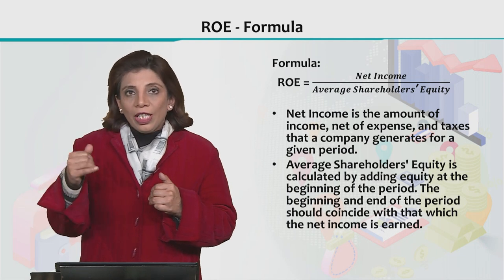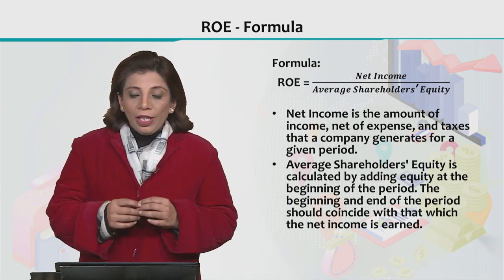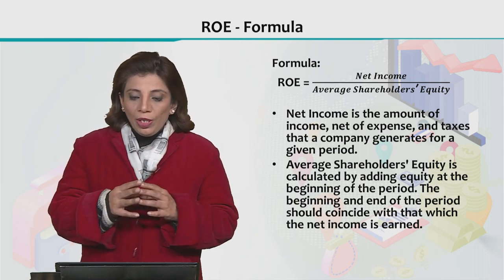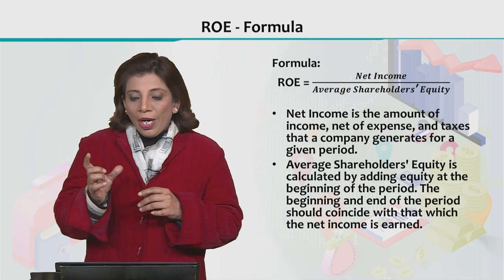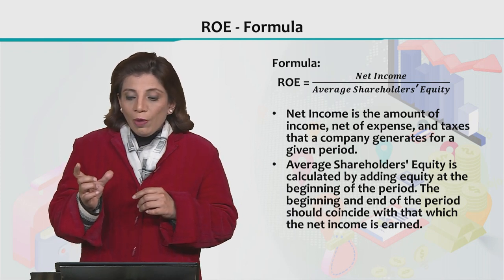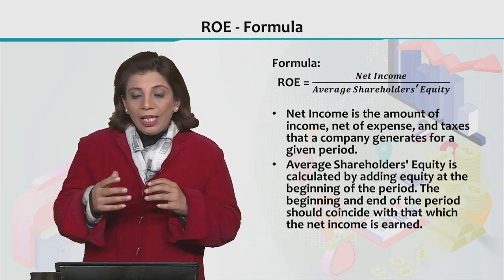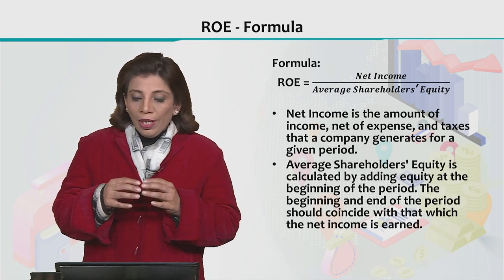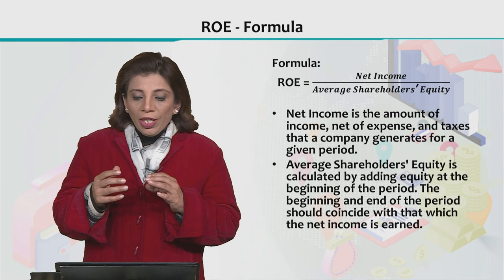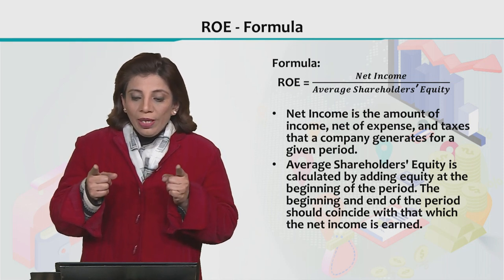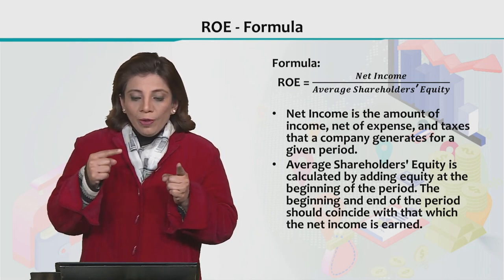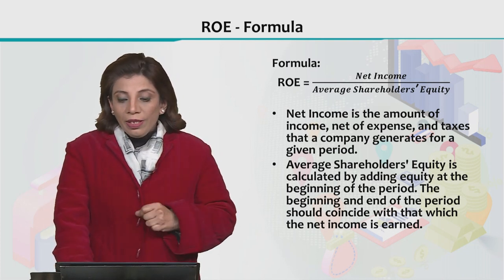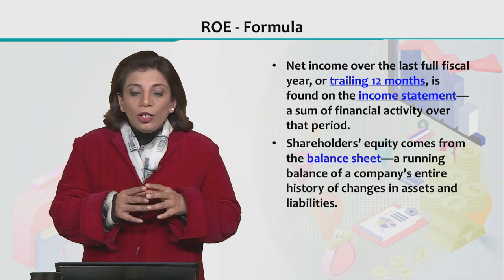Taxes will be deducted as well in order to find out the value of net income, and this gives you the value that goes in the numerator. Average shareholder's equity is calculated by adding the equity at the beginning and end of the period, and the beginning and end of that period should coincide with the period over which the net income is earned.